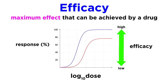By contrast, efficacy deals with the maximum effect that can be achieved by a drug, such that after this is reached, no higher dose will produce any further effect. Two different drugs may have similar potencies, meaning that the response increases over the same increase in dosage, but one will achieve a more significant response than the other due to its higher efficacy.